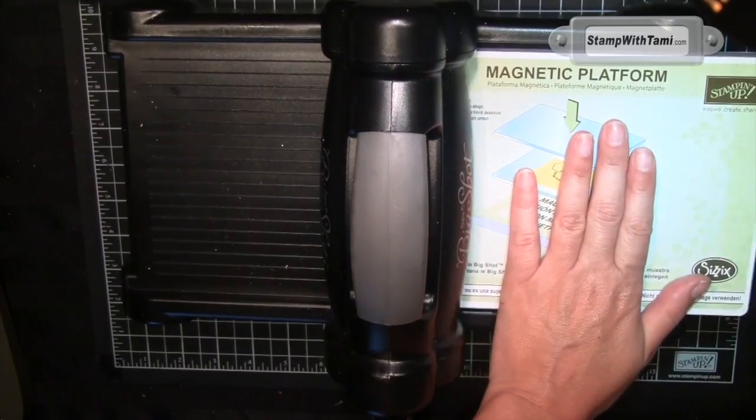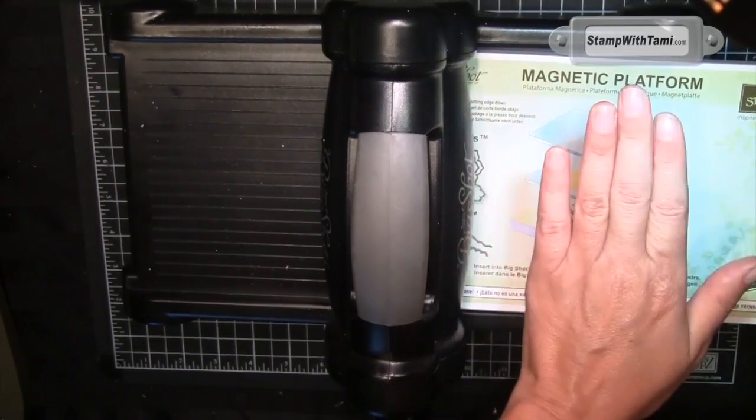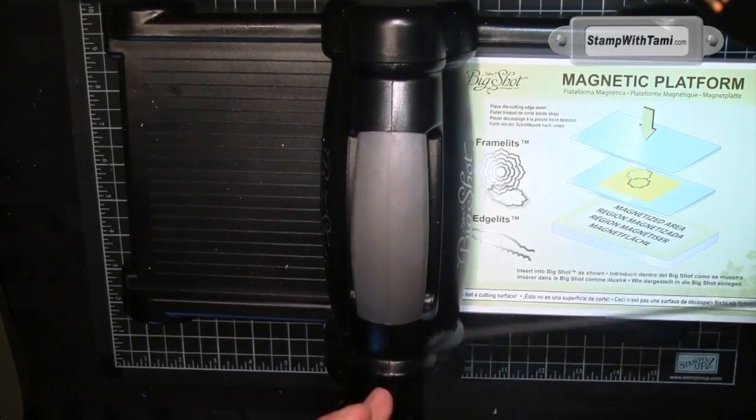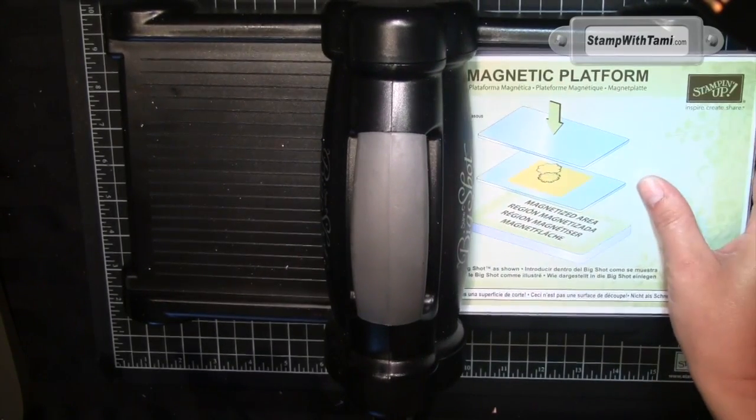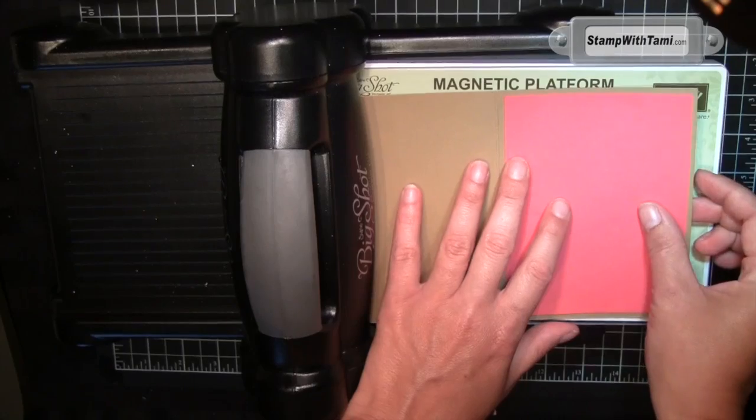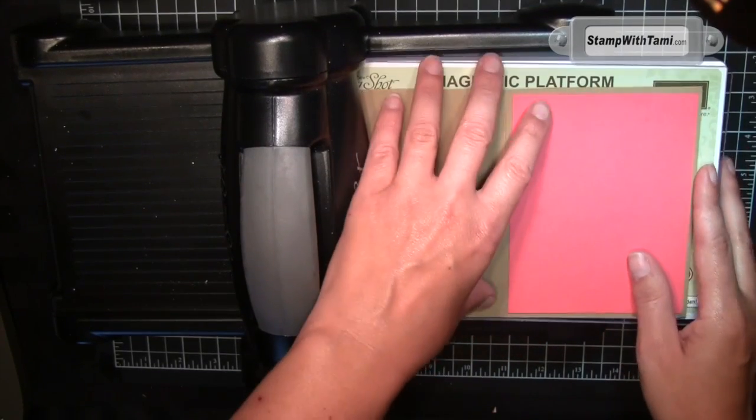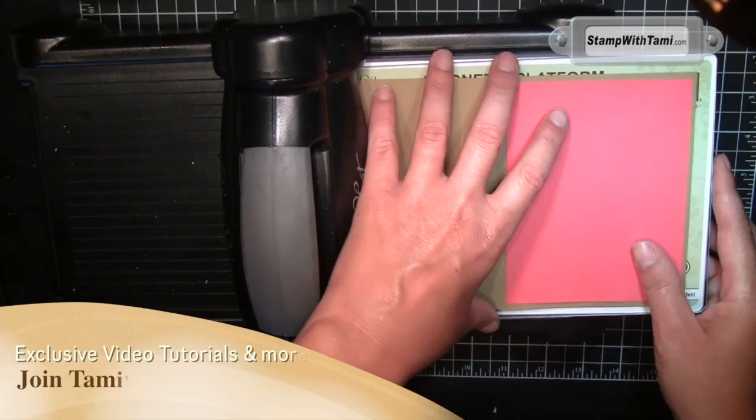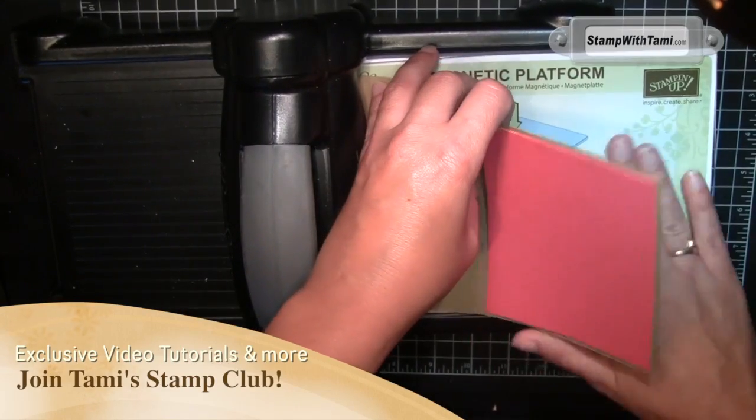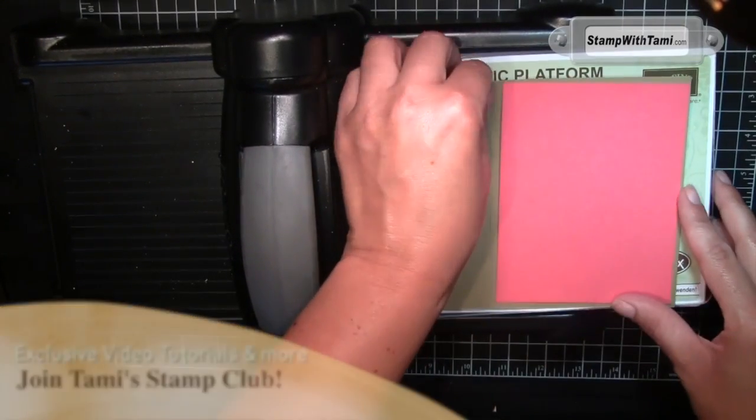I'm using our new magnetic platform because this is the bomb. I really don't want our framelits to move while we make this window sheet. It's important that this particular cut is exactly where I want it. I've got a cutting pad on the magnetic platform—it's brand spanking new, oh my gosh I love new.